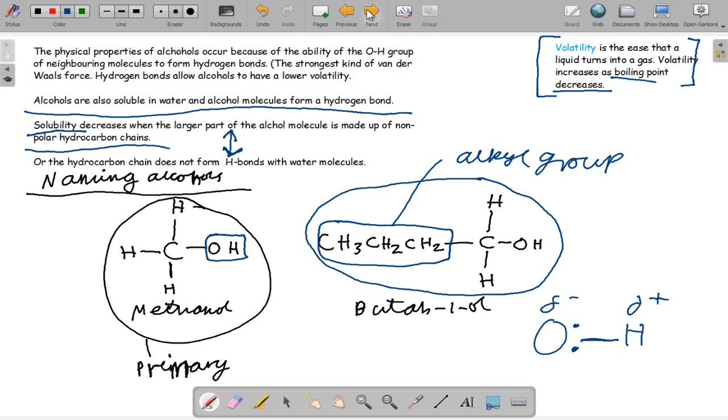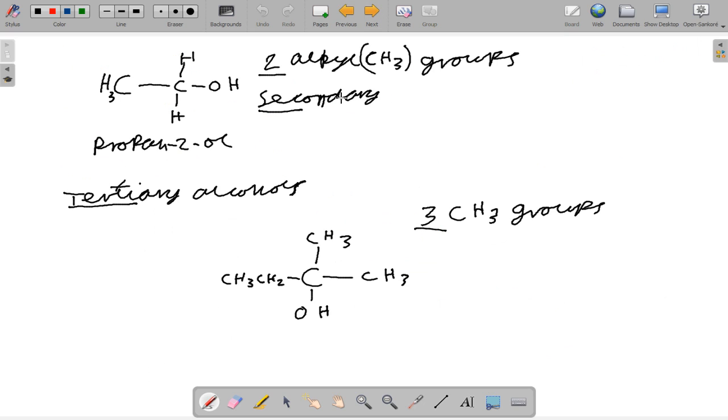So now we move on to looking at secondary alcohols. This secondary alcohol has got two carbon atoms attached to this propan-2-ol. I'll just adjust my diagram as two CH3 groups are attached to this.